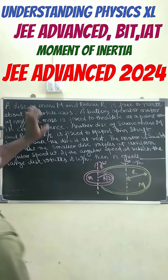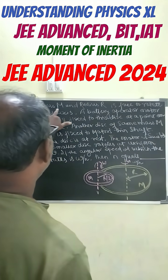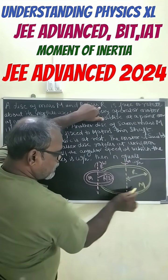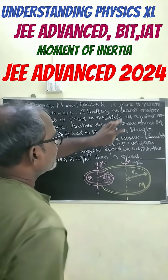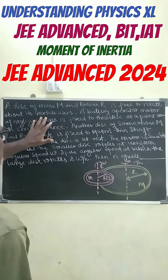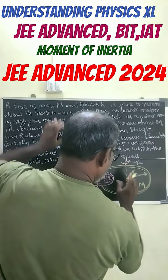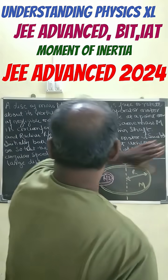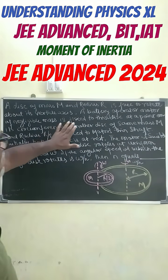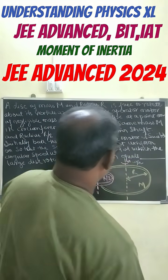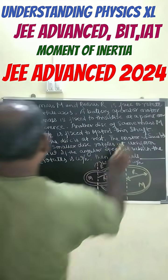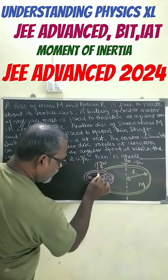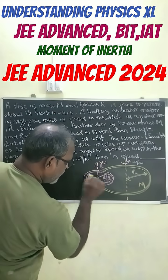Let us read the question. A disk of mass M and radius R is free to rotate about its vertical axis. A battery-operated motor of negligible mass is fixed to this disk at a point on its circumference.